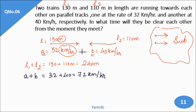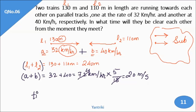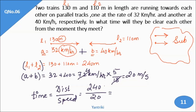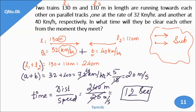Now to convert 72 km per hour to meters per second, I multiply by 5/18, which gives 20 meters per second. Now I have L1 plus L2 as 240 meters and relative speed as 20 m/s. Time equals distance divided by speed: 240 divided by 20 gives 12 seconds. So both trains will be crossing each other in 12 seconds.